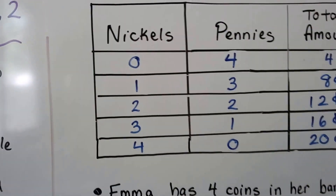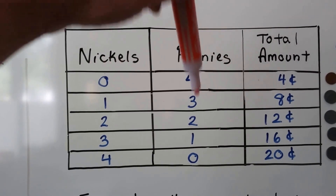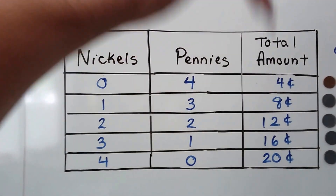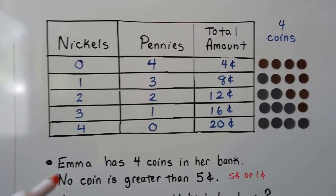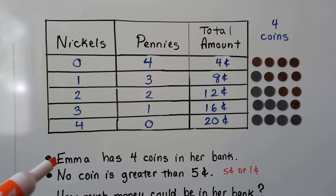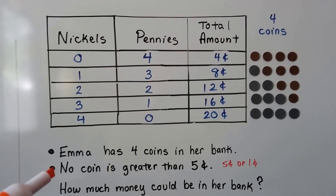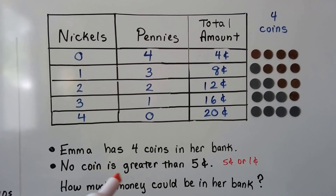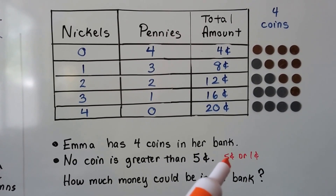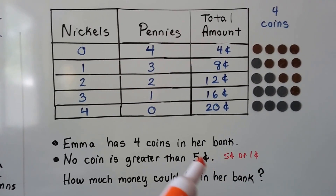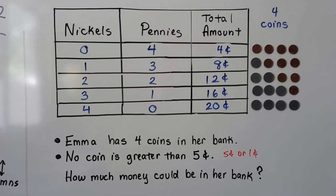Here I've made a table for our word problem. You can see I have a column for nickels, a column for pennies, and a column for total amount. Here's our word problem: Emma has four coins in her bank and no coin is greater than five cents. That means the coins can be five cents or one cent — they just can't be bigger than five cents.